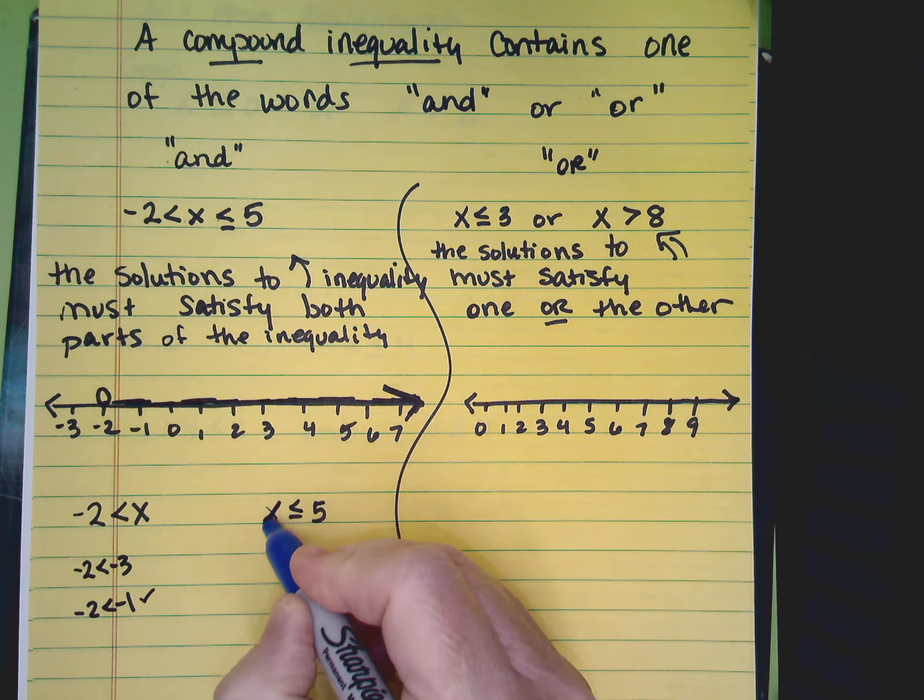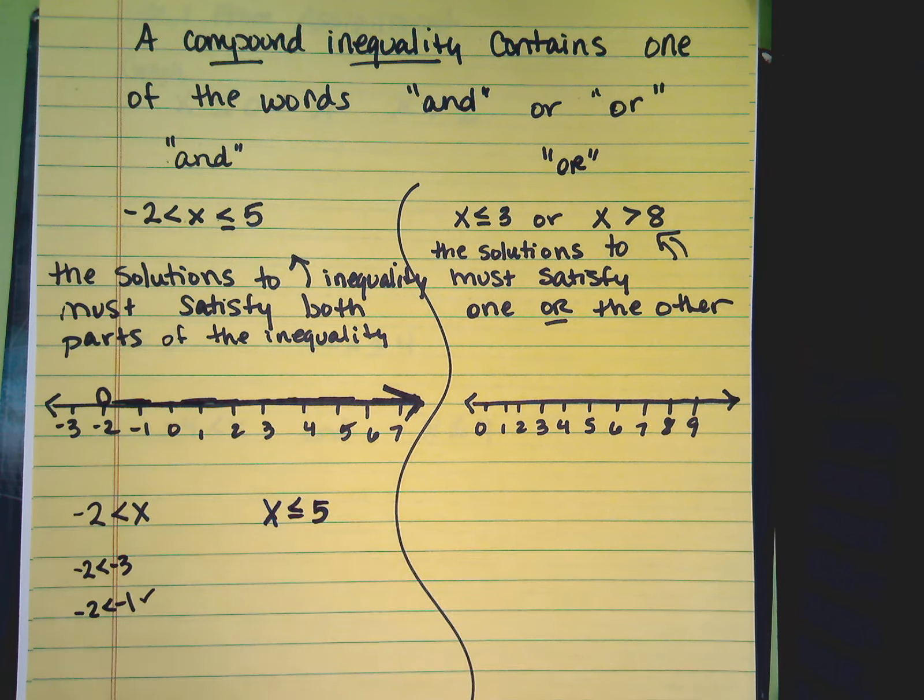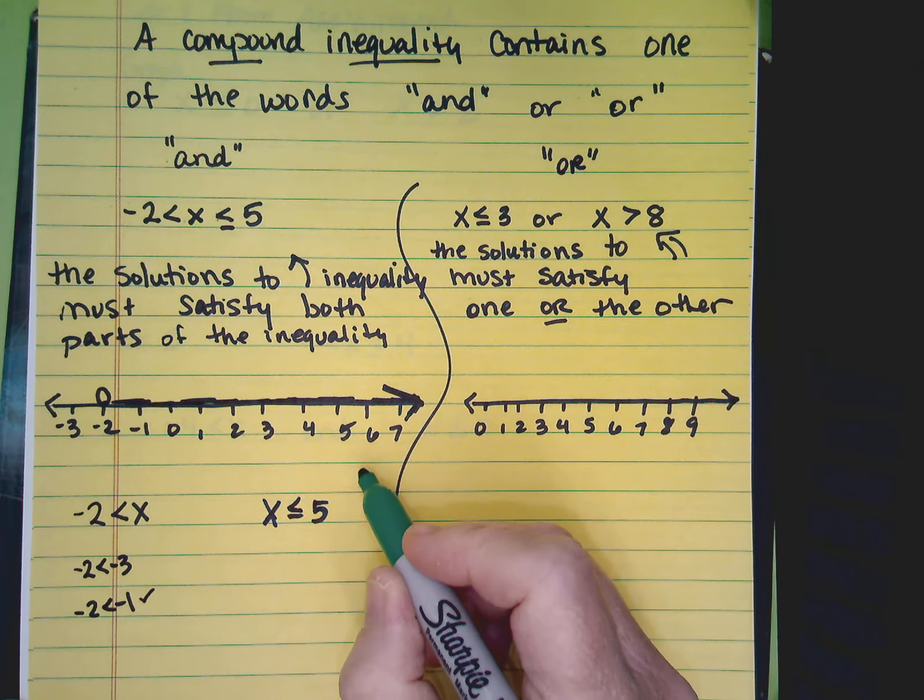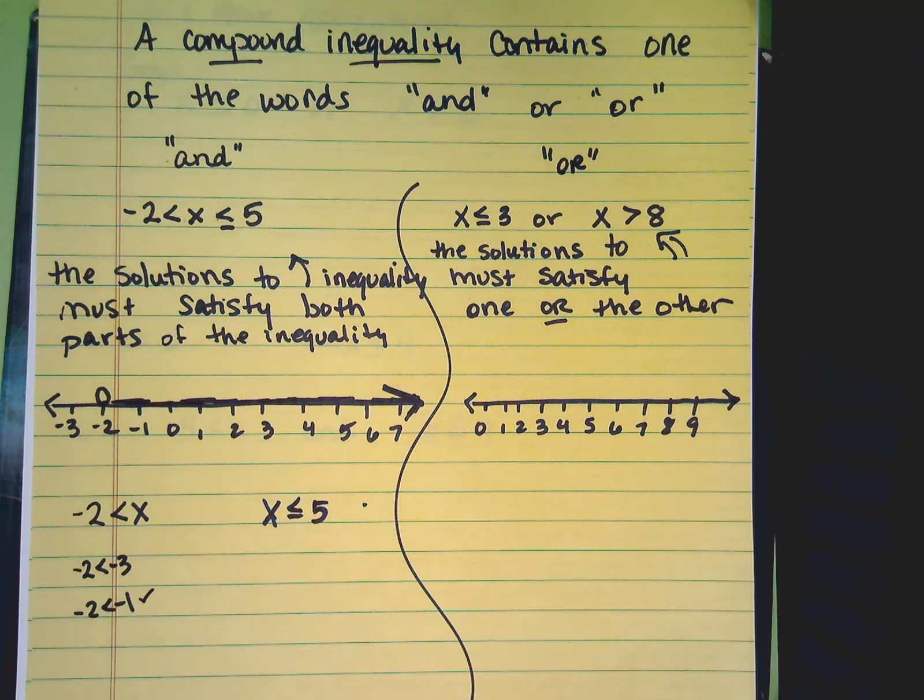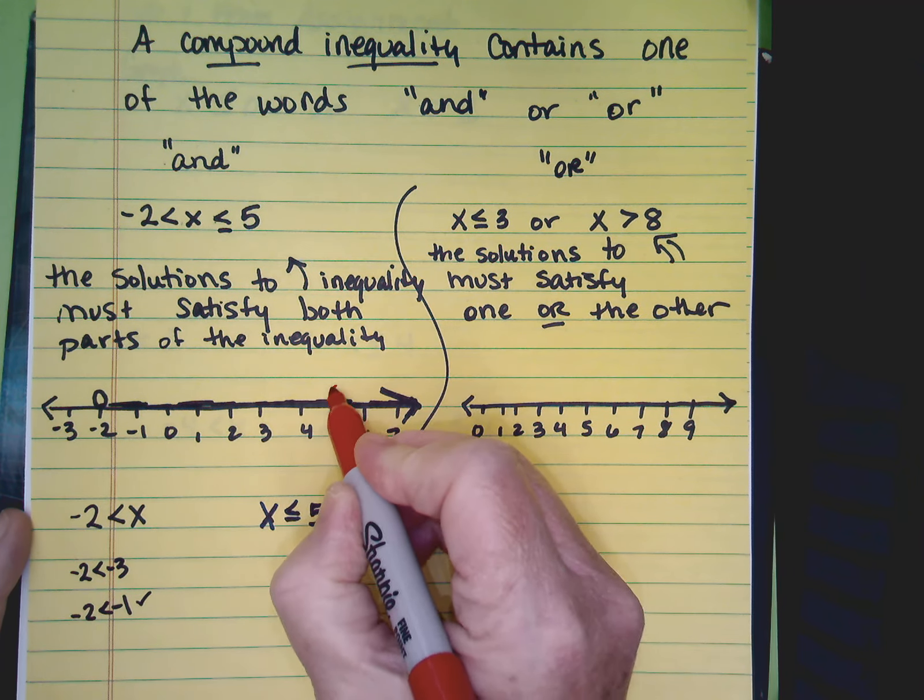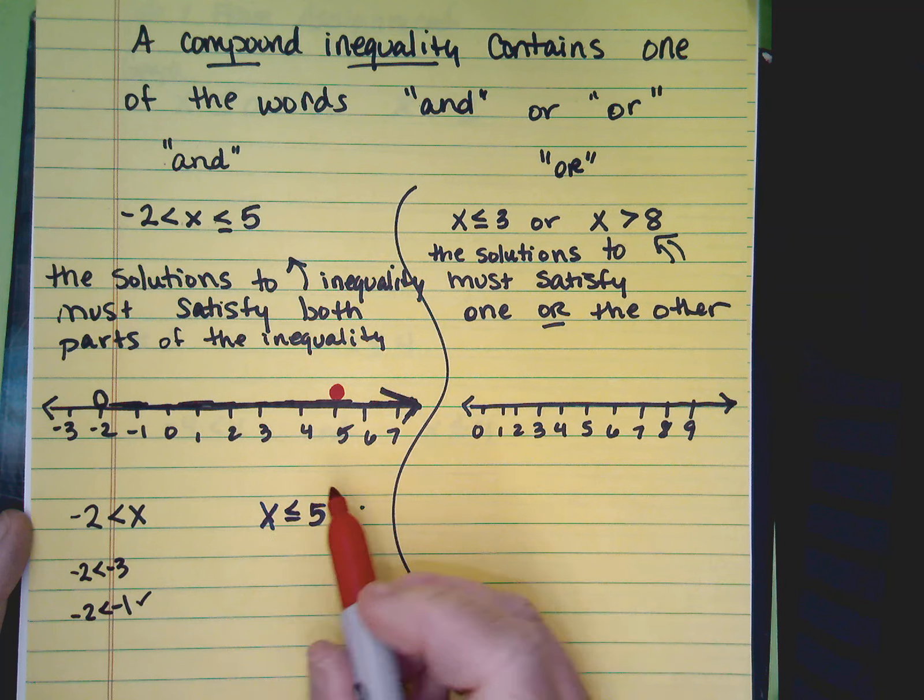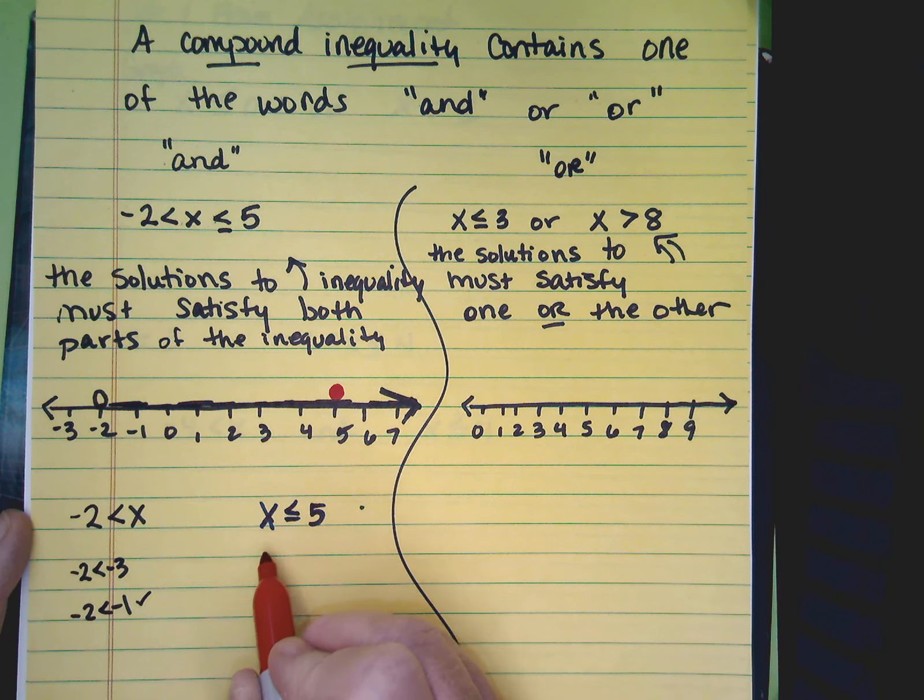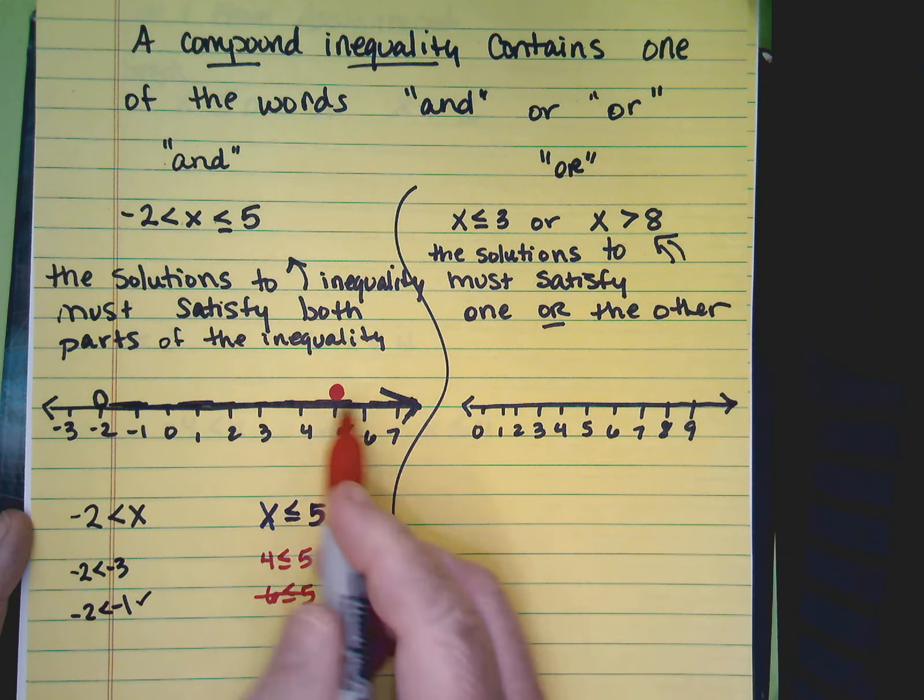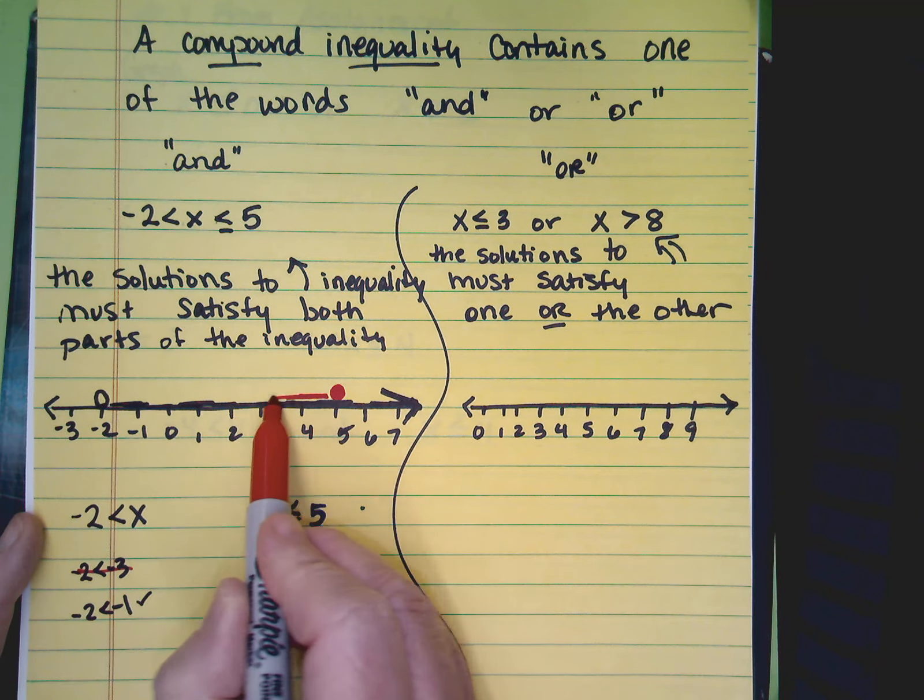I'm going to graph. I'm going to change colors. I'm going to use a green one for this. I don't even know if you can tell the difference in green. Let me switch to red. So what kind of circle do I need at 5? It should be closed. And I'm going to test it. 4? Yes. 6? No.